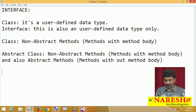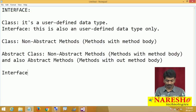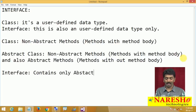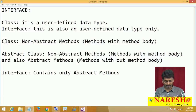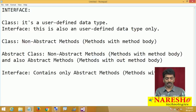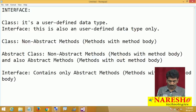So just as a discussion: a class contains non-abstract methods, that is methods with method body. An abstract class contains non-abstract methods and also abstract methods — methods without method body. And now the third thing is an interface. An interface contains only abstract methods, only methods without method body.